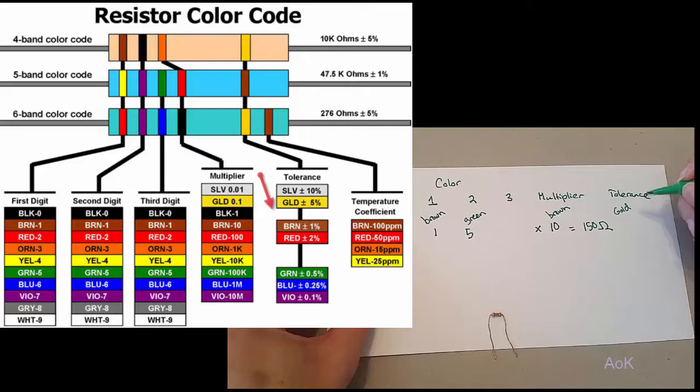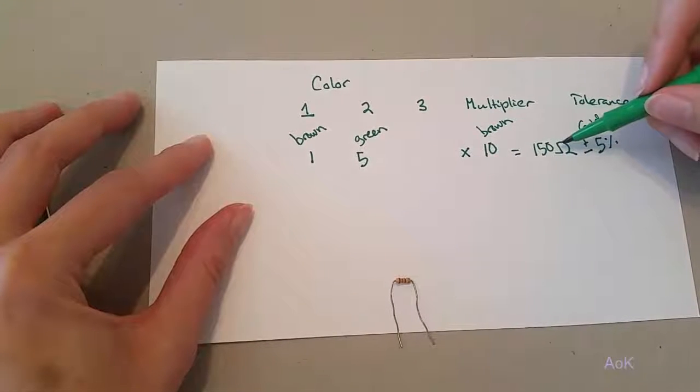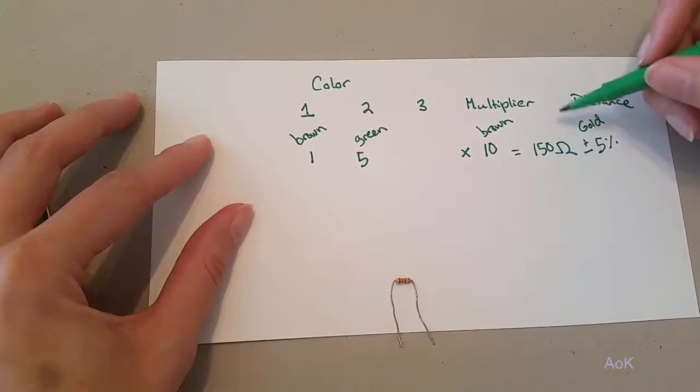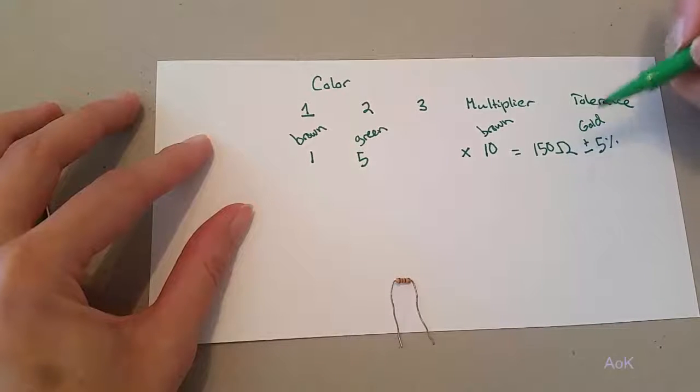The gold is the tolerance, so it's telling you that it's plus or minus 5%. The value of the 150 ohms can go up or down by about 5%, depending on the resistor.